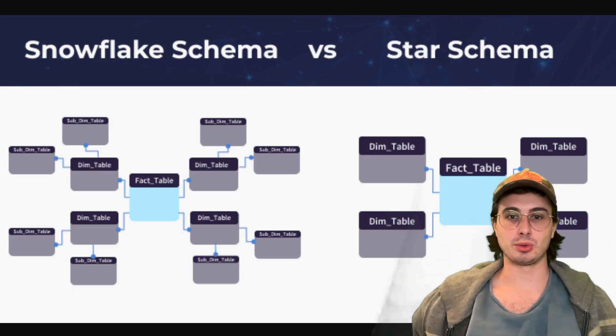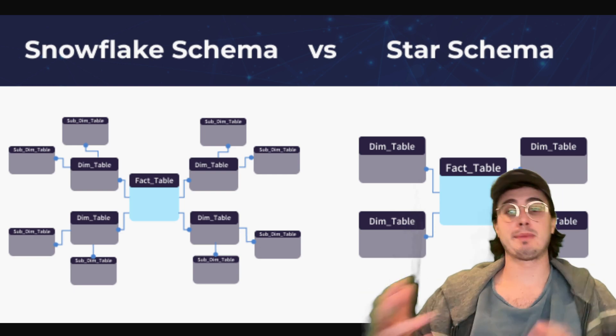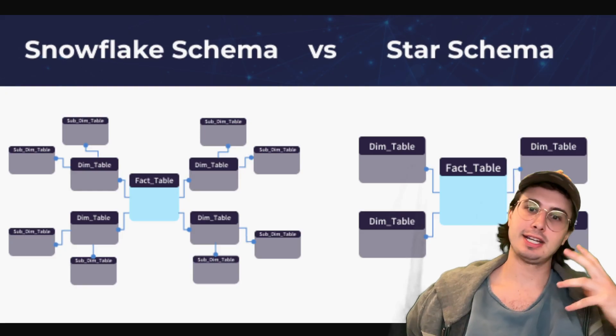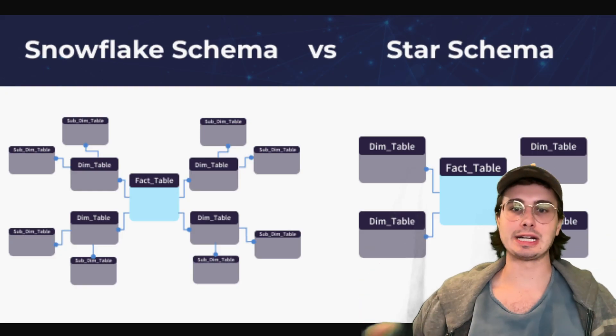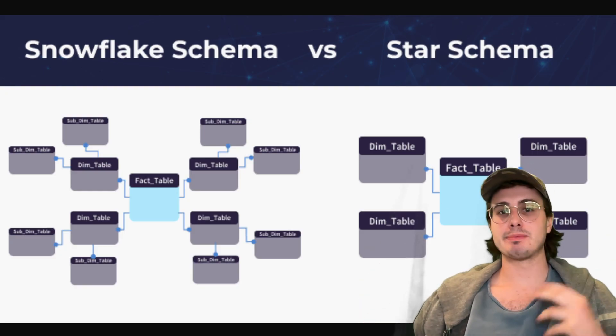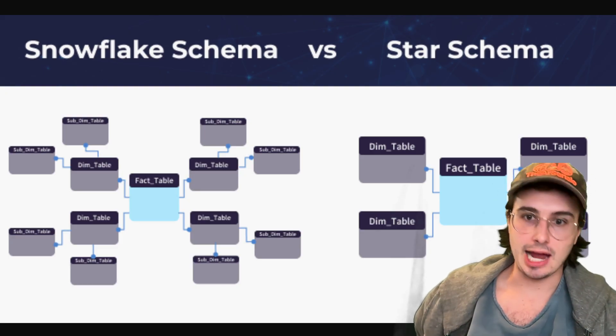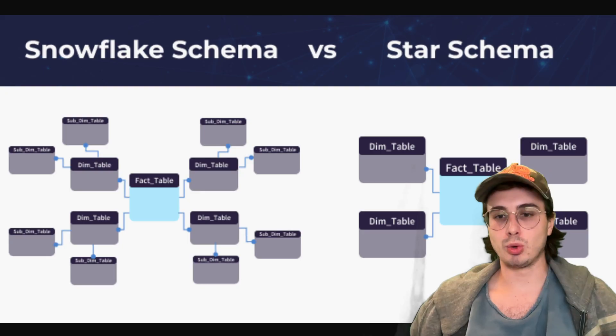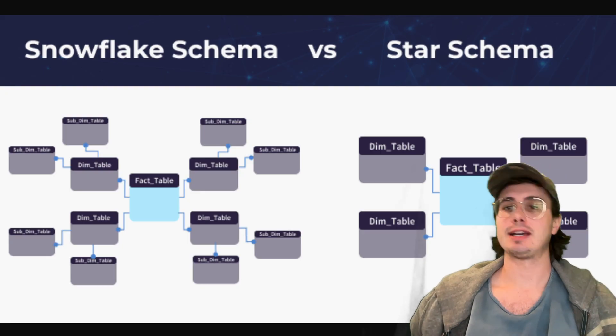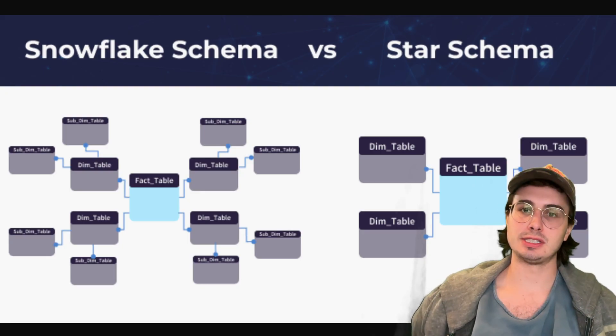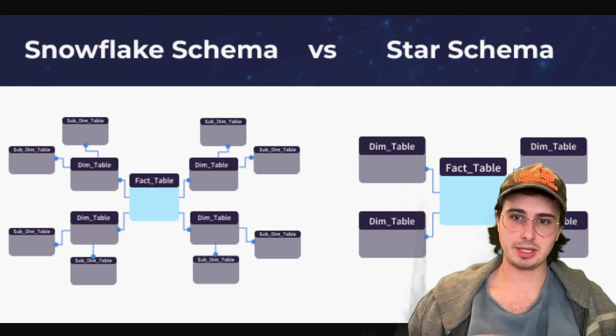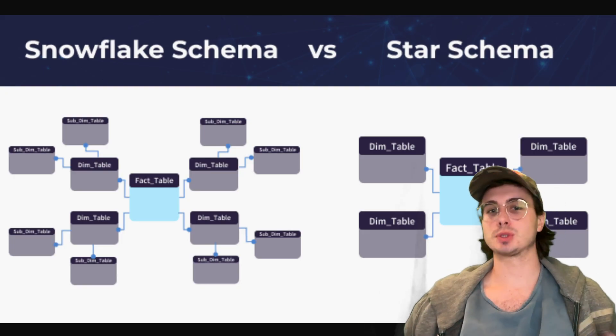A snowflake schema has normalized dimensions that reduce storage, enables more complex queries with additional joins, has many smaller tables working together, and is a better choice for managing dimensional hierarchies with more complex data types. Highlighting these differences and their use cases should be sufficient.